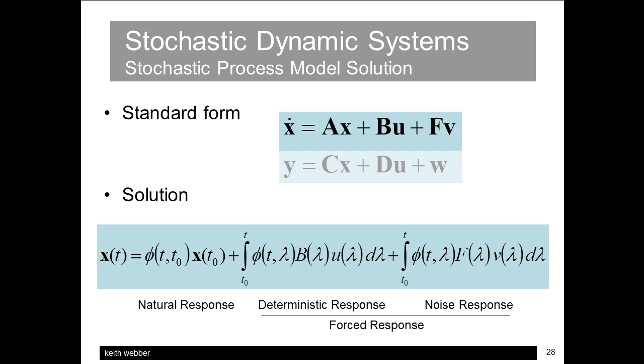The solution to the enhanced state equations follows the standard state-space model procedure, where the natural response is obtained by the state-transition matrix operating on the initial state, and the forced responses are convolutions of the state-transition matrix and the input variables integrated over the elapsed time period T minus T0. The noise term here, however, would have to be integrated using the stochastic integral to avoid the infinities.